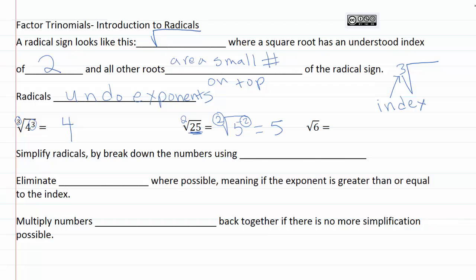Now sometimes when we have radicals, we're not going to be able to eliminate them. And in that case, it's going to be helpful to know that there are a couple of different ways that we can still rewrite them. For example, if we had the square root of six, we could rewrite this as the square root of two times the square root of three. This means that whenever you have a radical, you can write it as the product of two different radicals. So in order to simplify radicals, we need to break down the numbers using prime factorization, and then we can eliminate the radicals where possible.